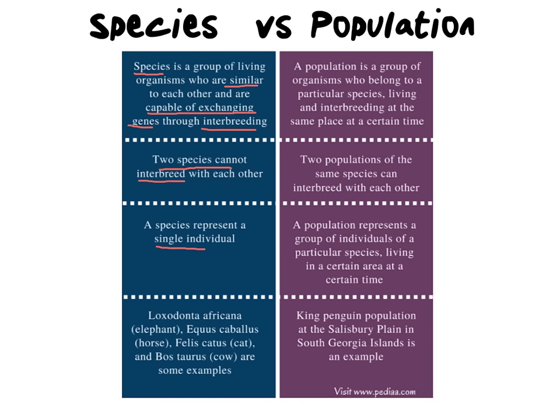Species represent individuals, and we have many different examples of species names. An example could be Loxodonta africana, which is our elephant. We have Equus caballus, which is our horse — and those are species names. One species of elephant may not be able to reproduce with another species of elephant. For example, the African elephant is one species and the Asian elephant is another different species.